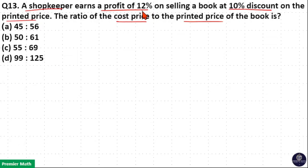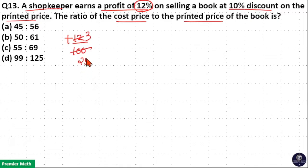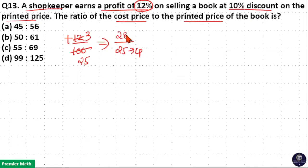Profit of 12% means plus. So 12% means 12 by 100. 4 goes 3 times in 12, and 4 goes 25 times in 100. So plus 3 by 25 means if 25 parts is the cost price, then 25 plus 3 — 28 parts — is the selling price. This is the meaning of 12% profit.